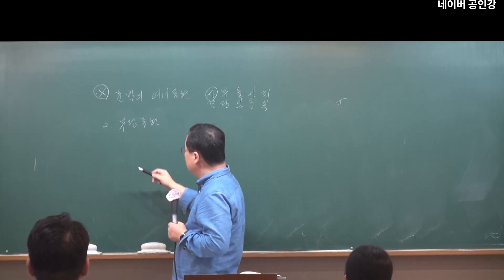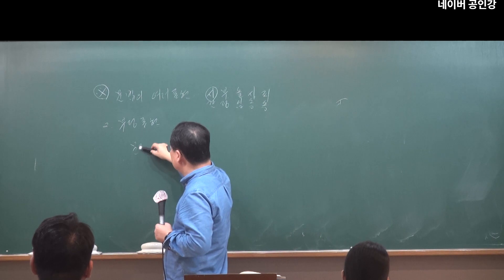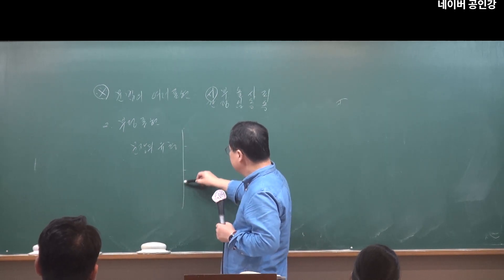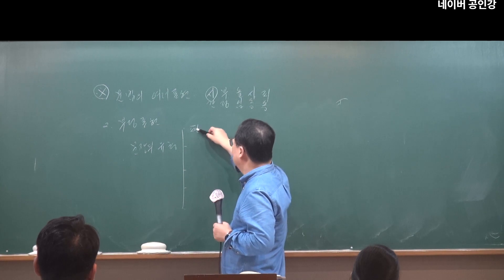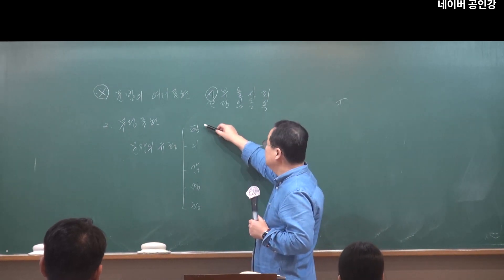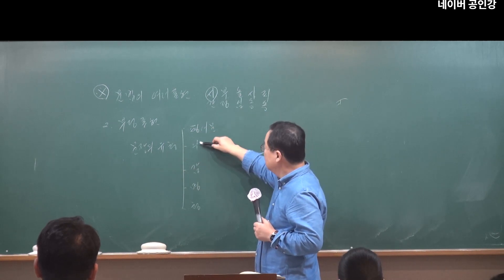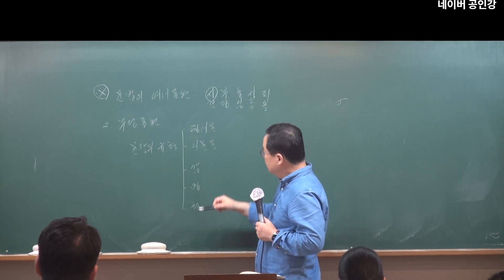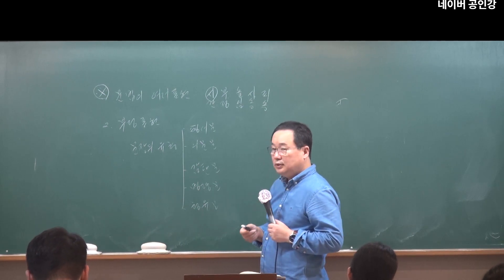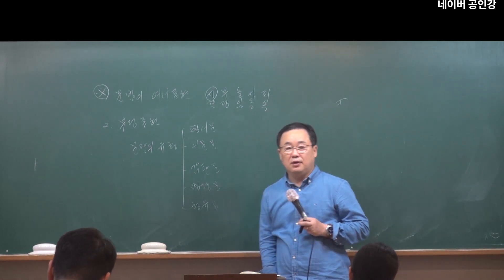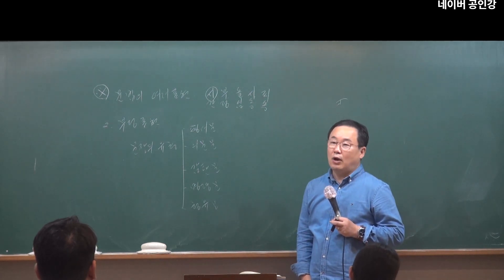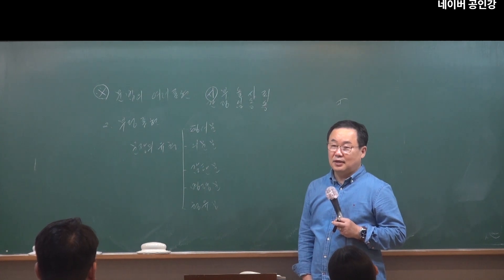우리 국어에 문형, 즉 문장의 유형이 있습니다. 문장의 유형은 다섯 가지로 평서문, 의문문, 감탄문, 명령문, 청유문이 있습니다. 우리 국어에서 문형의 결정은 종결어미에 의해서 이루어진다고 이전에 설명한 적이 있습니다.